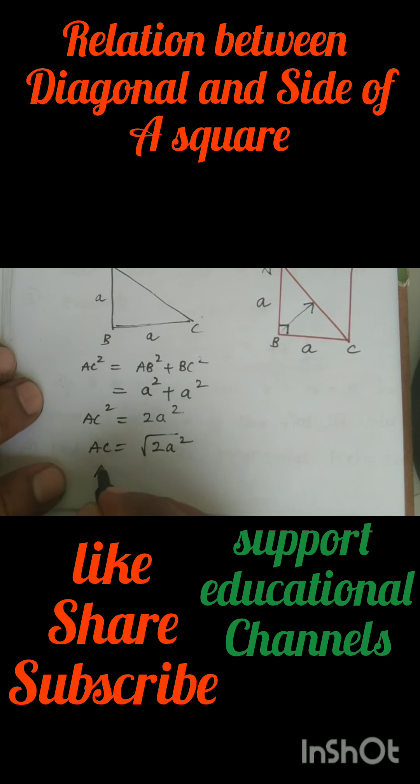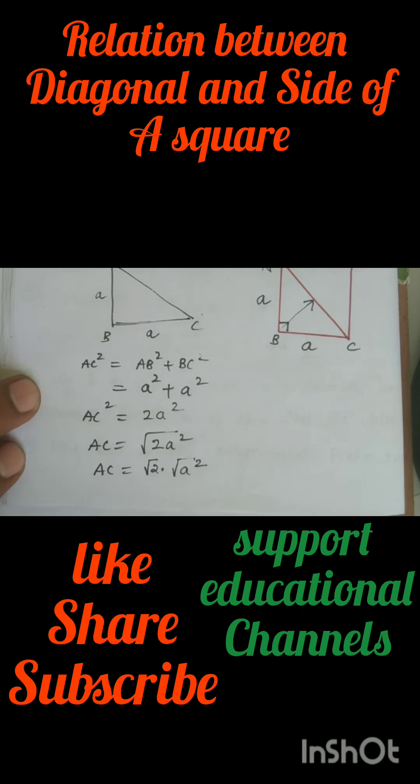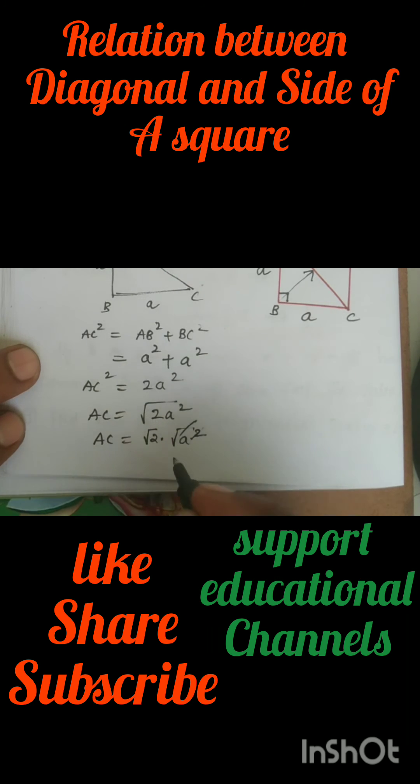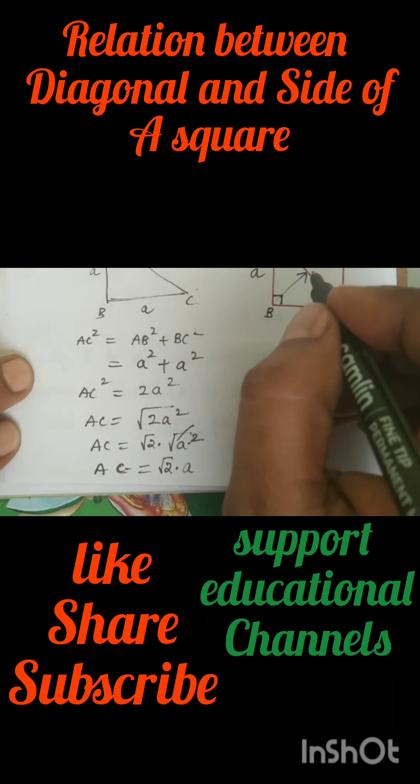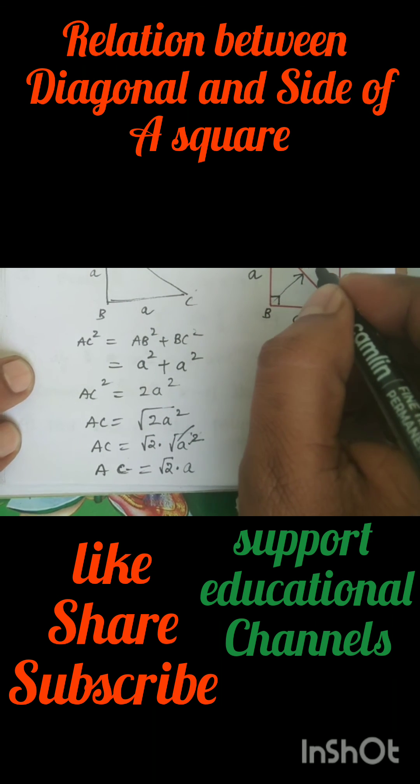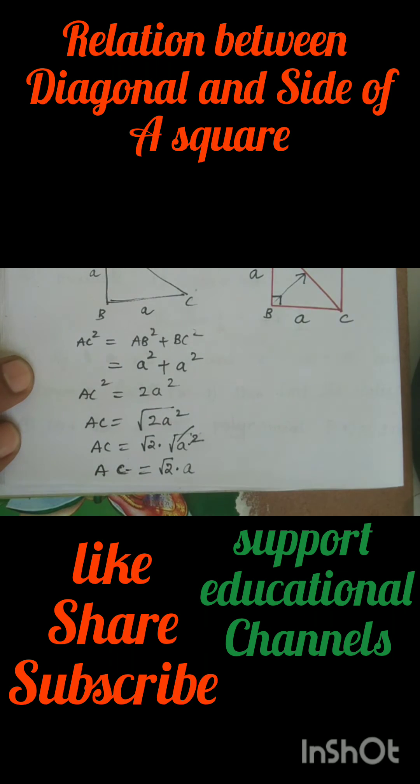Therefore AC is equal to root 2 into root a square. As square root cancels, AC is equal to square root 2 into a. Therefore, diagonal of a square is root 2a.